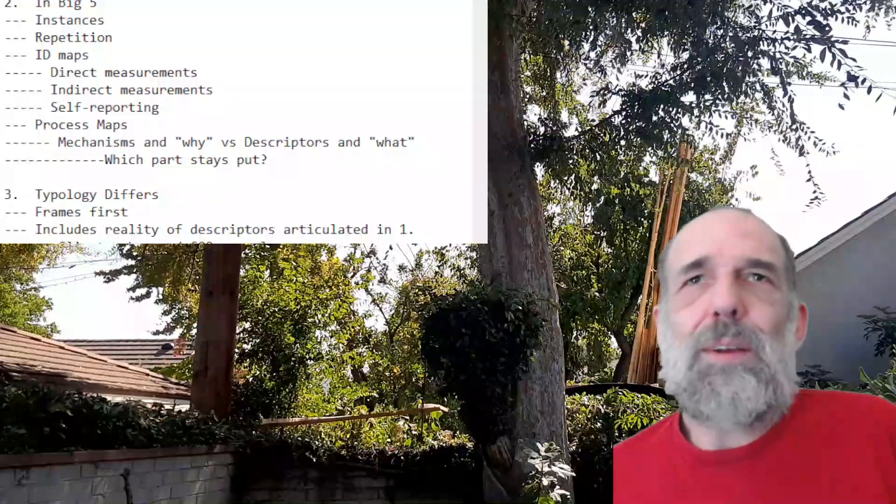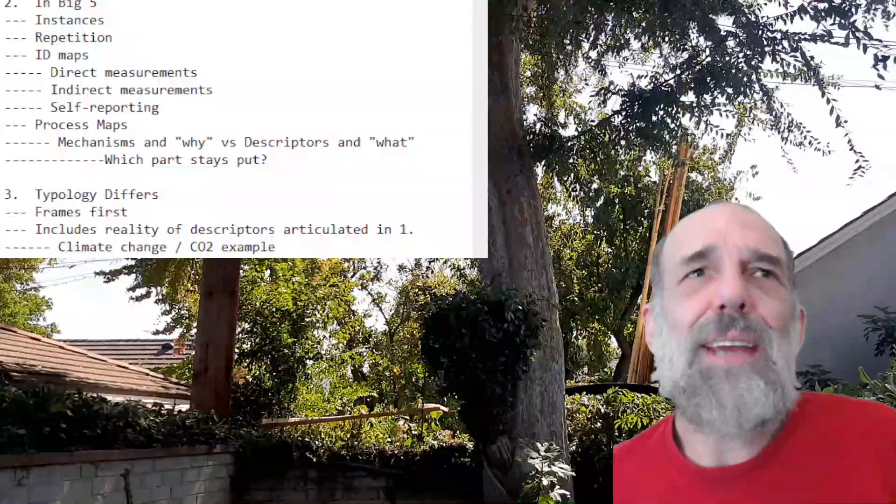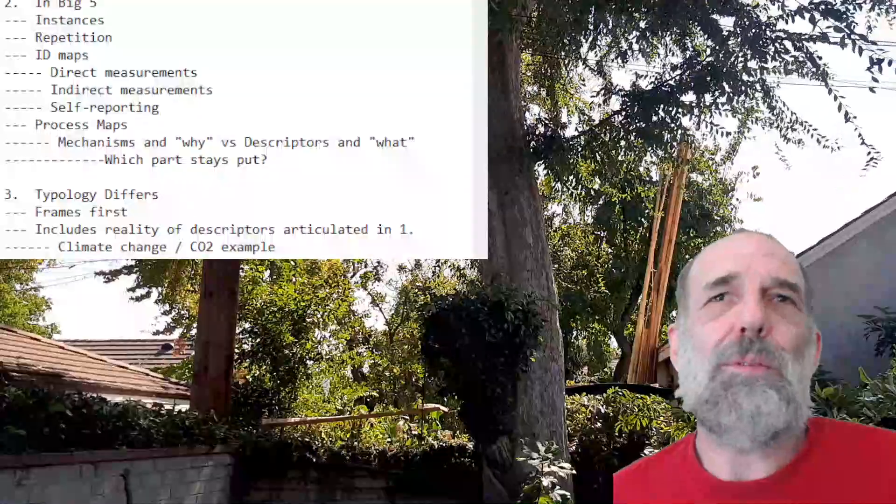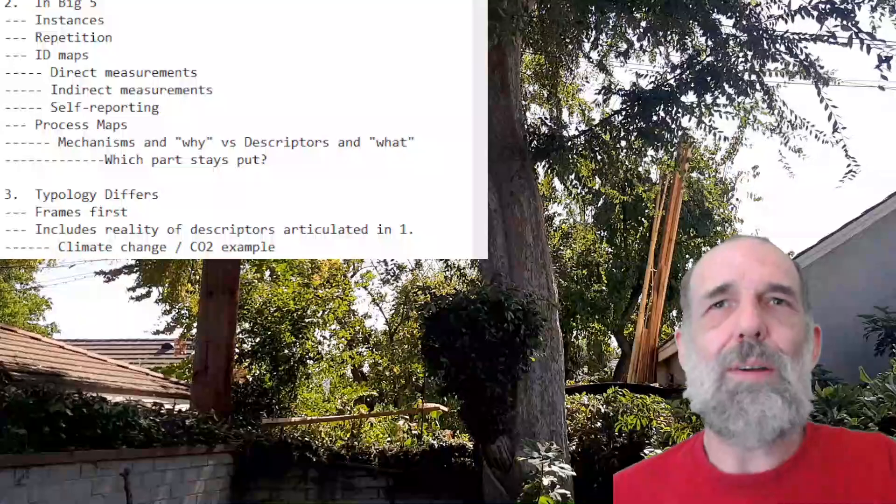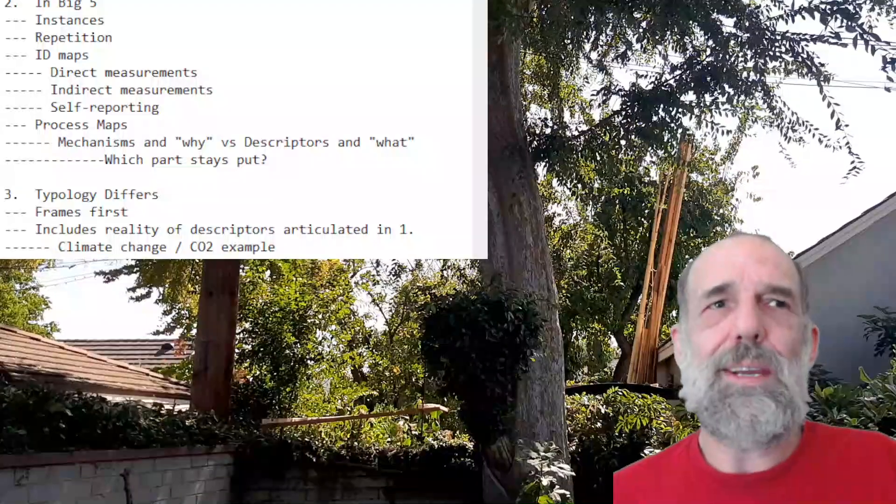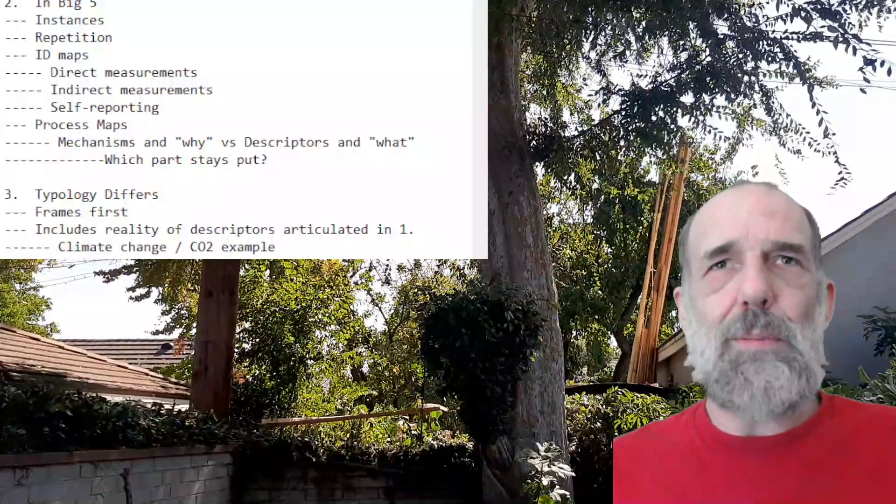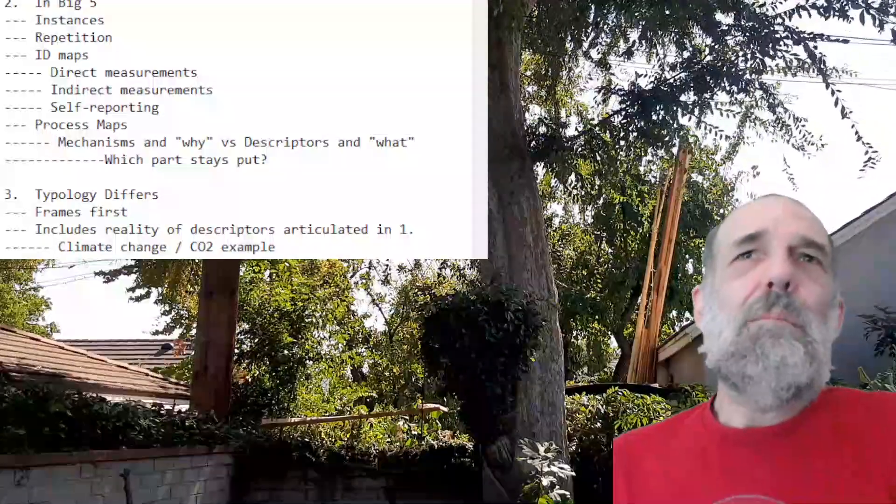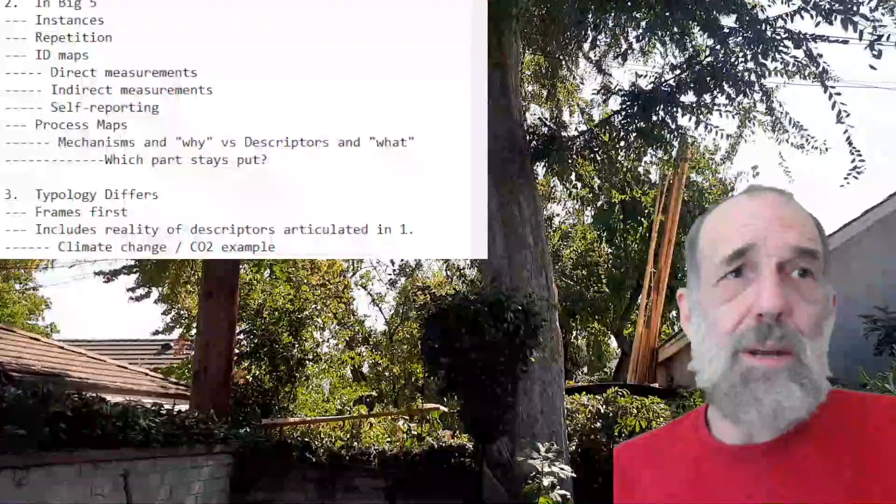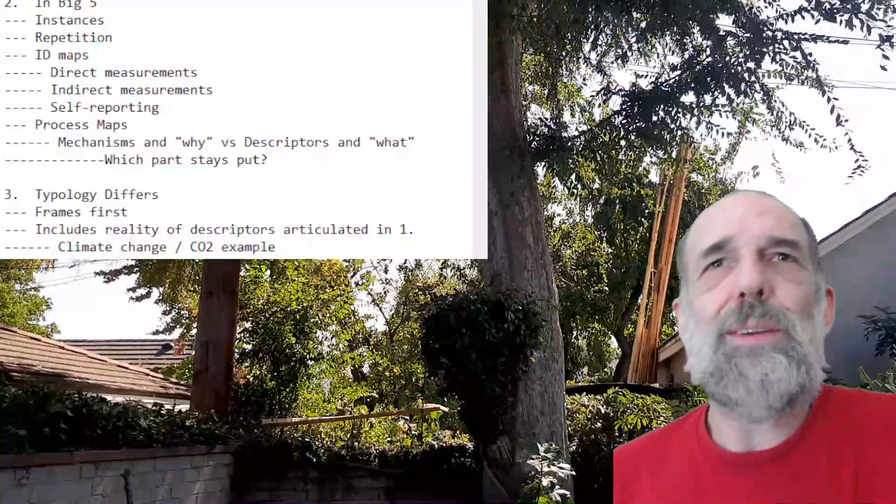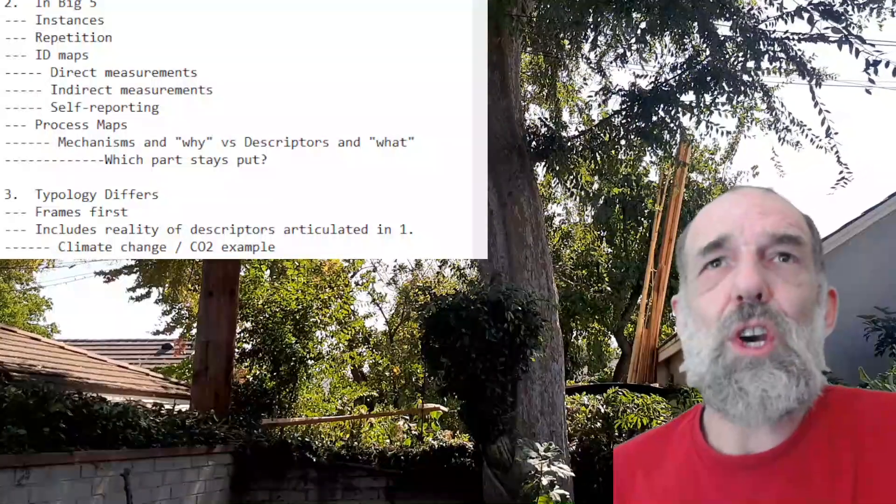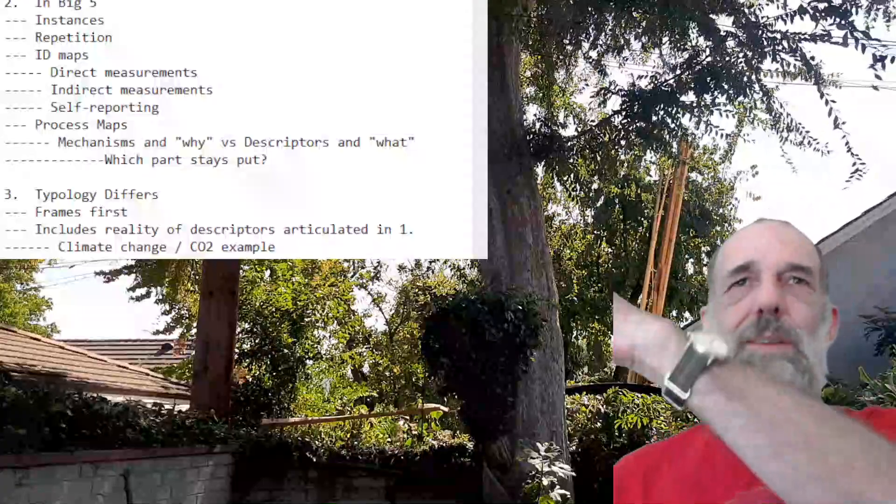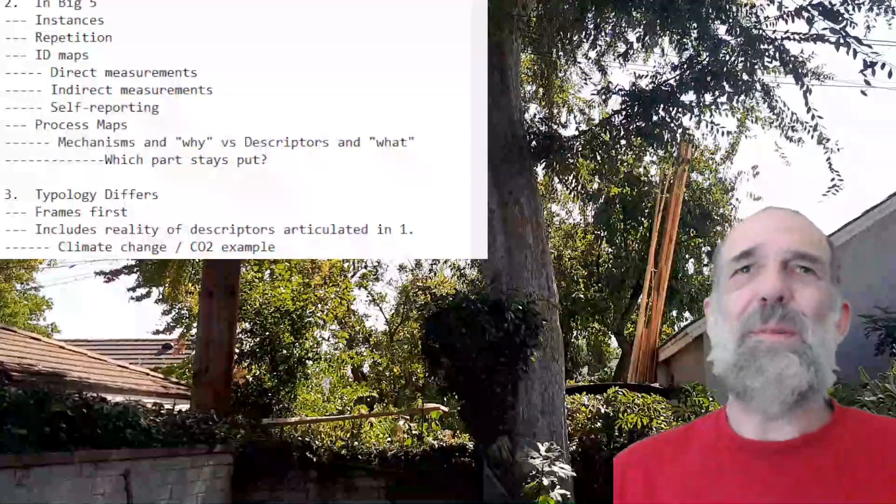So, typology includes reality of description and articulating one. It takes into account the fact that there are different kinds of relationships between attributes that we might describe. And I'll give you an example from the real world about what happens when people don't think about the framings of things. So, we know that climate change is real, and we know that it's anthropogenic, which is to say it's caused by humans, namely by the putting of carbon dioxide into the atmosphere.